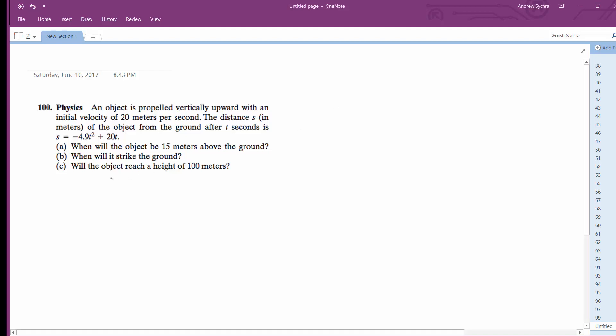The simple answer is we're just going to set S equal to 15 equals negative 4.9 T squared plus 20 T. I just moved 15 over to the right side and this becomes zero.